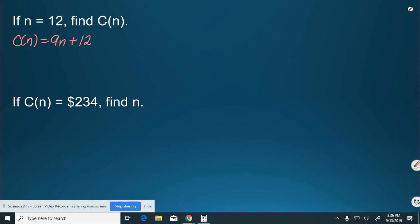I want to figure out how much it would cost for a dozen t-shirts. So, that's C(n) equals 9 times 12 plus 18. It would be 9 times 12, which is 108 plus 18, which is $126 for 12 t-shirts.